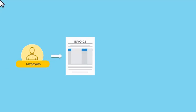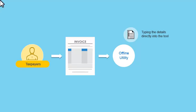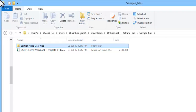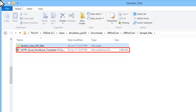Taxpayers can feed invoice data in the returns offline utility either by typing the details directly into the tool or by entering them into the GST-provided Excel or CSV templates and then importing those templates in the tool. This video will show you the steps of using this Excel template, importing line items in the offline utility, and then uploading it to the GST portal.